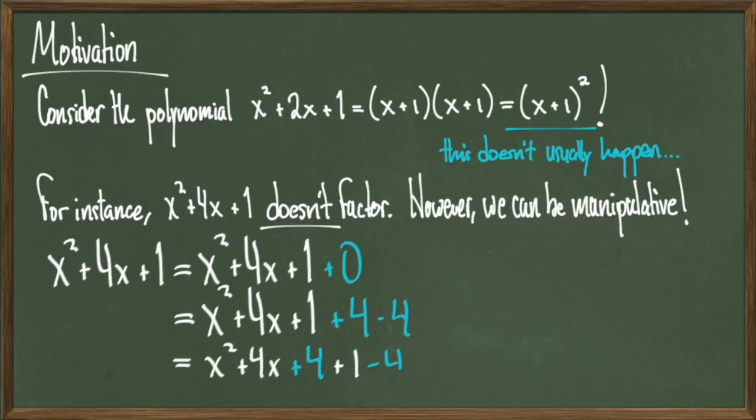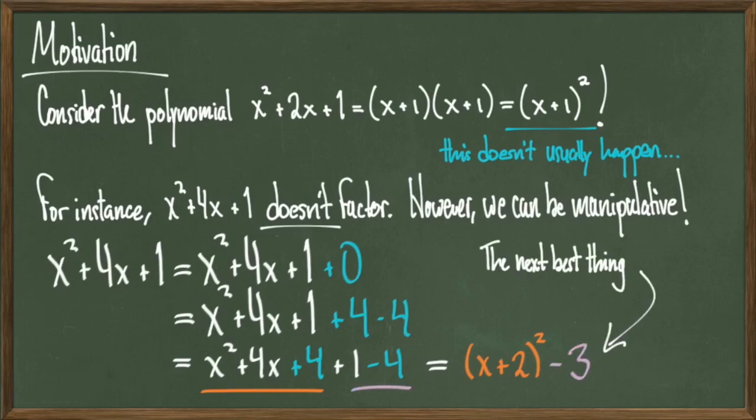Observe that the first three terms of this polynomial, x² + 4x + 4, does factor. And it factors into (x + 2)². And then I can add on my leftover term of 1 - 4, which is -3. So this isn't quite the result that I got upstairs, but it's pretty close. I have something that factored into a square of terms and a remainder term, so to speak. So I got what I wanted. I took the polynomial x² + 4x + 1, and I got to write it as the square of a degree one polynomial and a subtraction of 3.